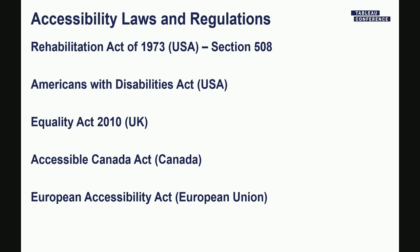There are a number of laws and regulations in this space, and it's growing — I had to add a few more from last year. Probably the biggest one in the United States is Section 508 of the Rehabilitation Act of 1973 — the US federal law that requires accessibility of electronic and information technology purchased and deployed within the federal government. It also flows down to some state and local agencies. About half the room is working under Section 508.